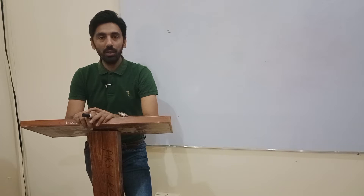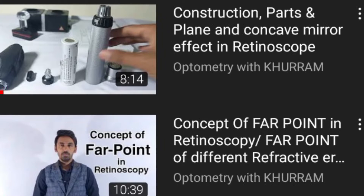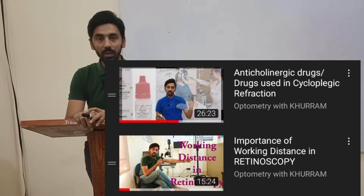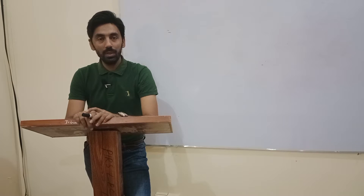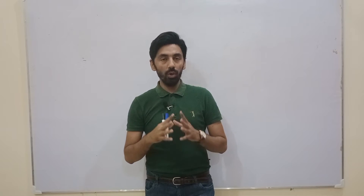This video is about the optical cross in retinoscopy. In the last videos we discussed the principles of the retinoscope, the different parts of the retinoscope, the importance of working distance in retinoscopy, the important drugs used in cycloplegic refraction, their dioptric allowance. Now this video is about the optical cross, the net retinoscopic values, the with movement, the against movement, and the neutral points.